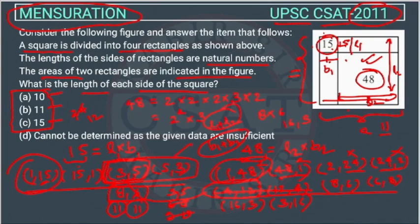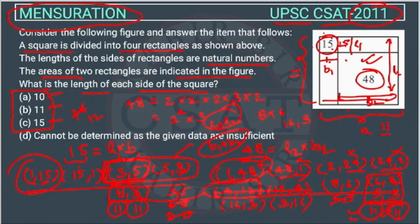We also verify 5×3 with 6×8: L1+L2 = 6+5 = 11 and B1+B2 = 8+3 = 11, which also gives 11. In both valid cases, L1+L2 = B1+B2 = 11. So the length of each side of the square is 11, and the answer is option B.